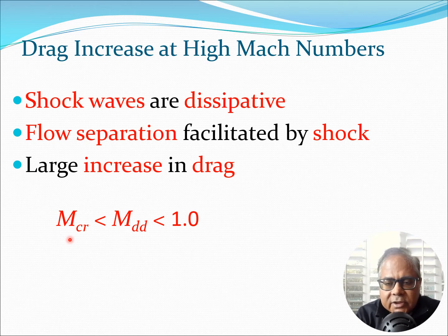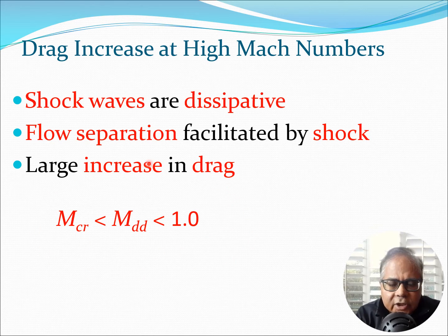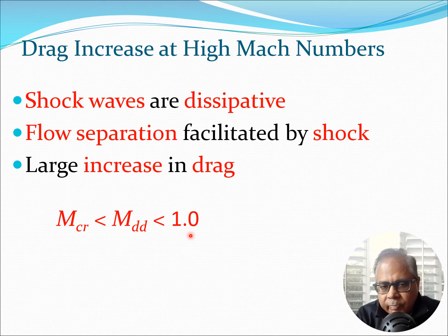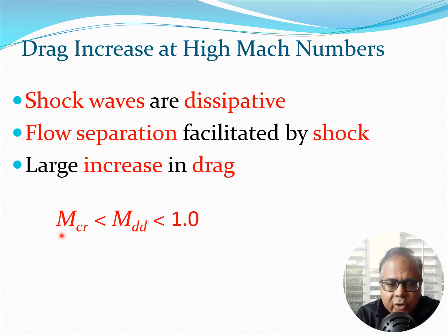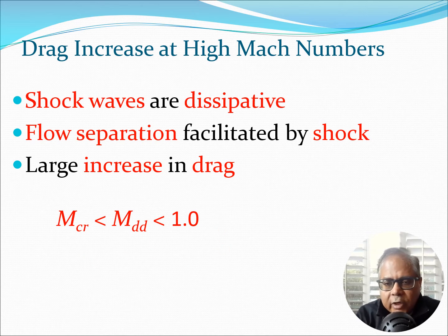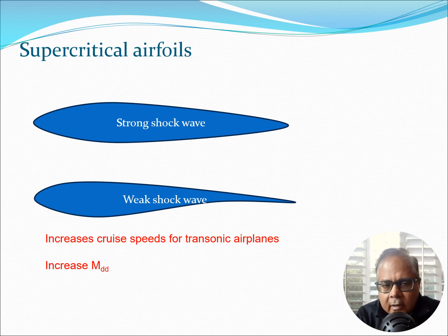In general, the drag divergence Mach number lies between the critical Mach number and 1. For example, if M_critical is 0.7, then M_DD might be around 0.8, and then you have Mach 1 as the sonic condition.